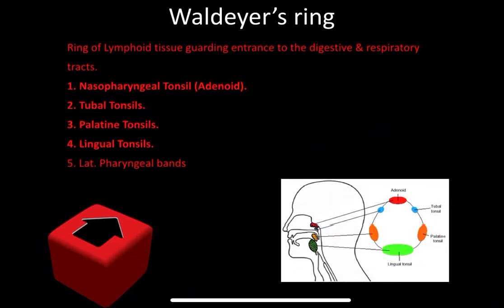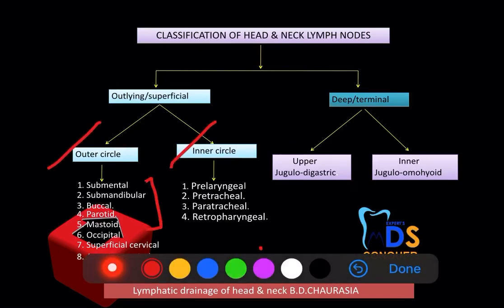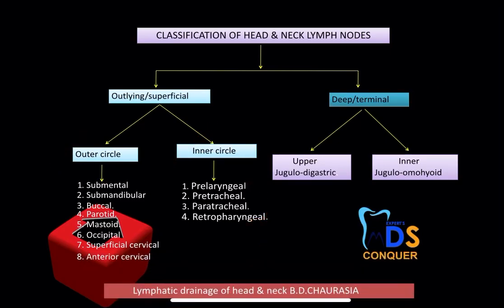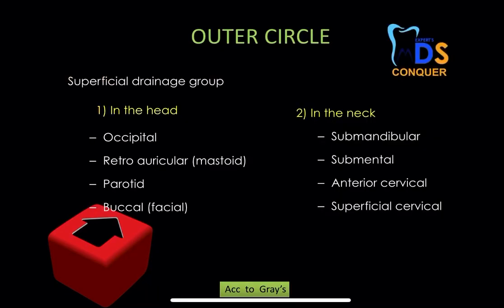You have to classify the head and neck lymph nodes into superficial and deep groups — the outer circle and inner circle, and the deep terminal lymph nodes. The upper jugulodigastric and juguloomohyoid are key. The outer circle importantly includes: submandibular, submental, buccal, parotid, mastoid, occipital, superficial cervical, and anterior cervical. The inner circle includes: pre-laryngeal, pre-tracheal, paratracheal, and retropharyngeal. This classification is taken from Chaurasia.